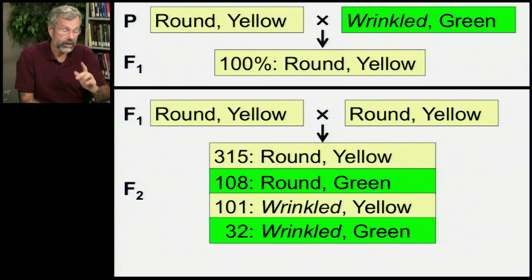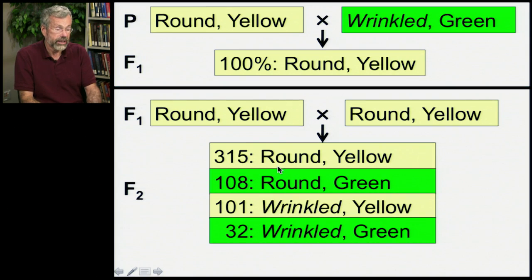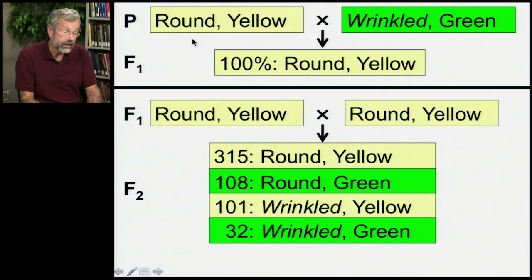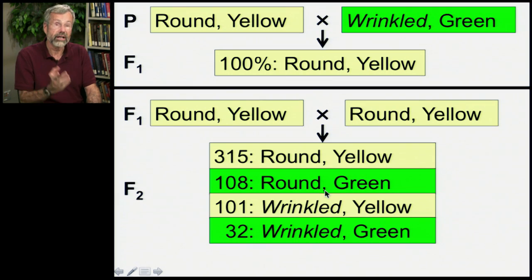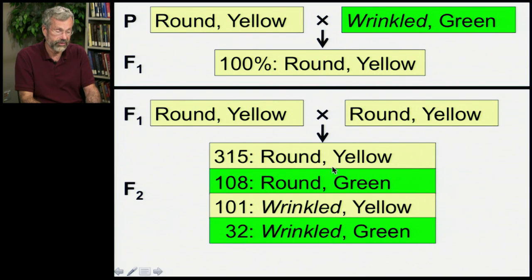So what are the four combinations? We have round and yellow — that's the same as the F1 and parental generations. But now we're also seeing round and green, which wasn't found in the parental or F1 generation. We're getting another new one: wrinkled yellow — wrinkle was found with green, not with yellow. And finally we see wrinkled green, which like round yellow was found back in the P generation.